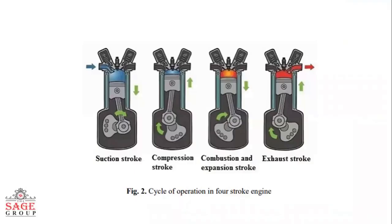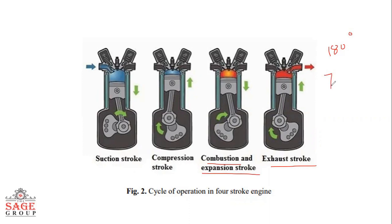In a four-stroke engine, the cycle of operation is completed in four strokes of the piston or two complete revolutions of the crankshaft. During these four strokes, five events need to be completed: induction, compression, combustion, expansion, and finally exhaust. Each stroke consists of 180 degrees of crankshaft revolution, and hence a four-stroke cycle is completed through 720 degrees of crankshaft revolution.